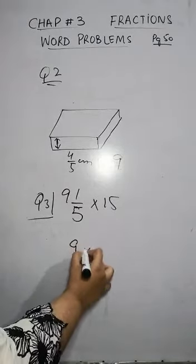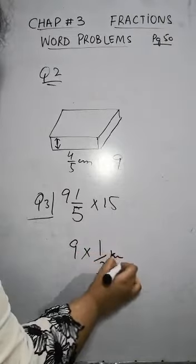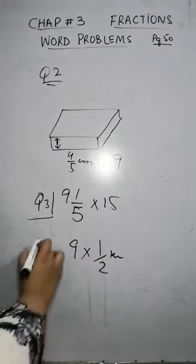So nine times walk, and how many kilometers? Half kilometers. So you will simply multiply it. That is for you, question number four.